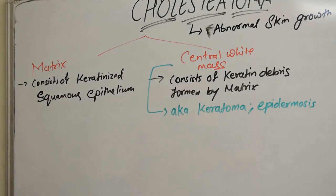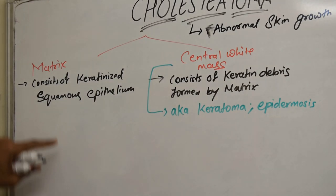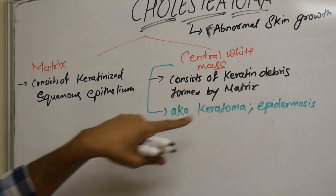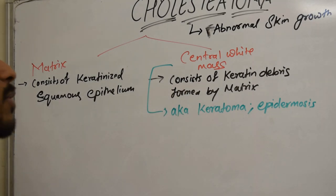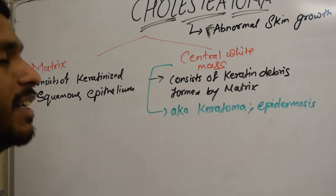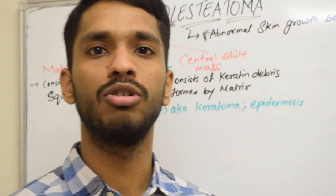So to summarize: Cholesteatoma is not a tumour. It is an abnormal skin growth in the middle ear behind the eardrum. It has two parts: a matrix consisting of keratinized squamous epithelium, and a central white mass of keratin debris formed by the matrix, also known as keratoma or epidermosis. There are many theories about how Cholesteatoma originates.